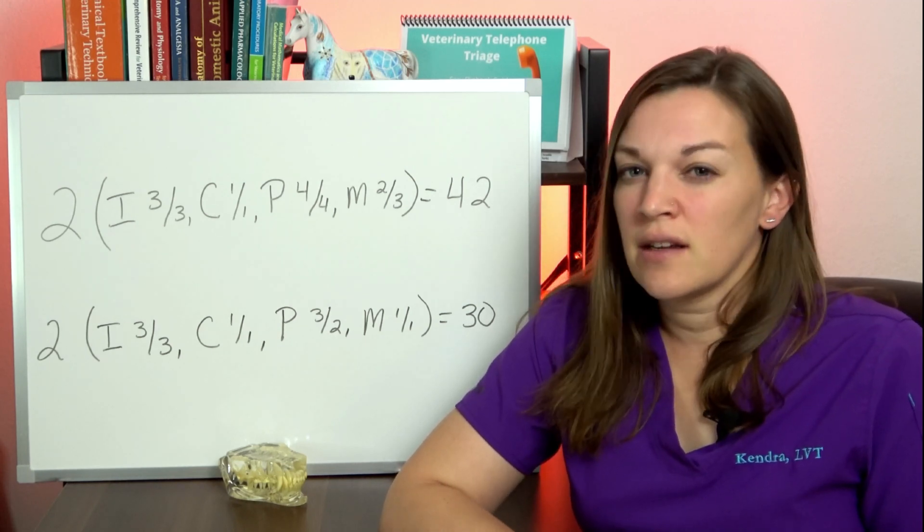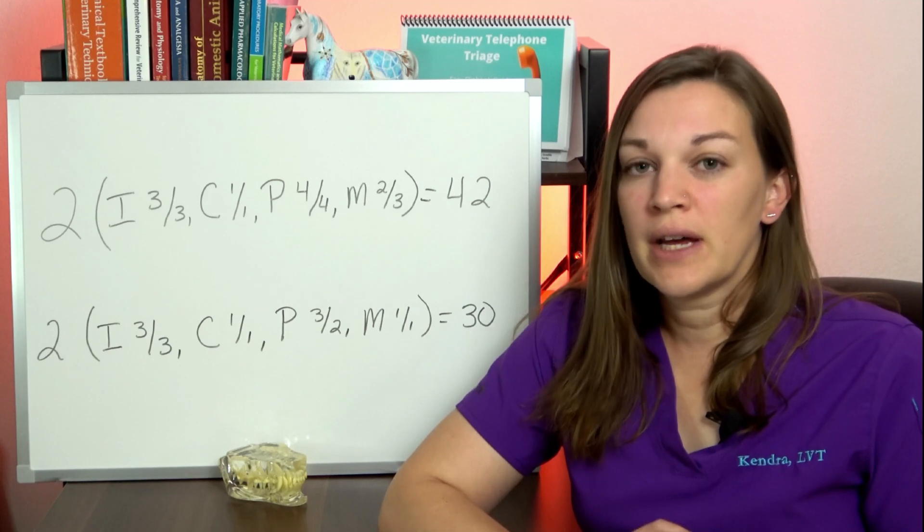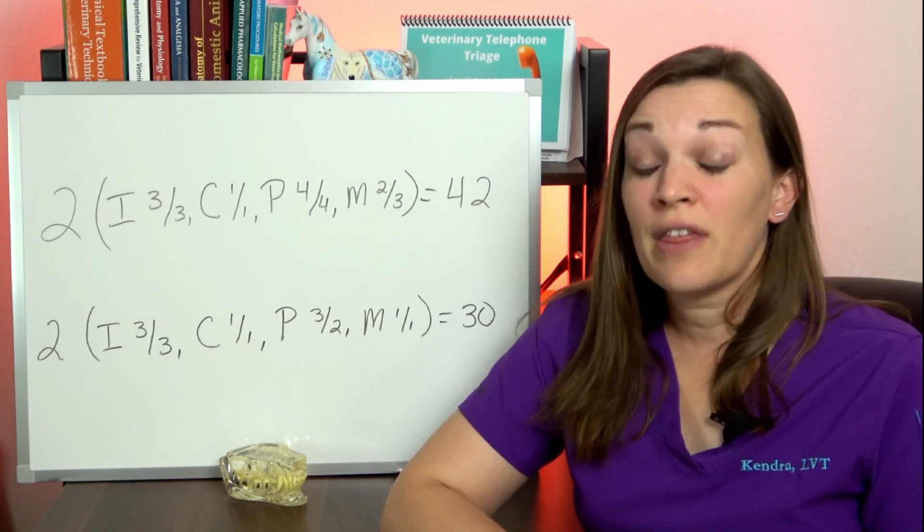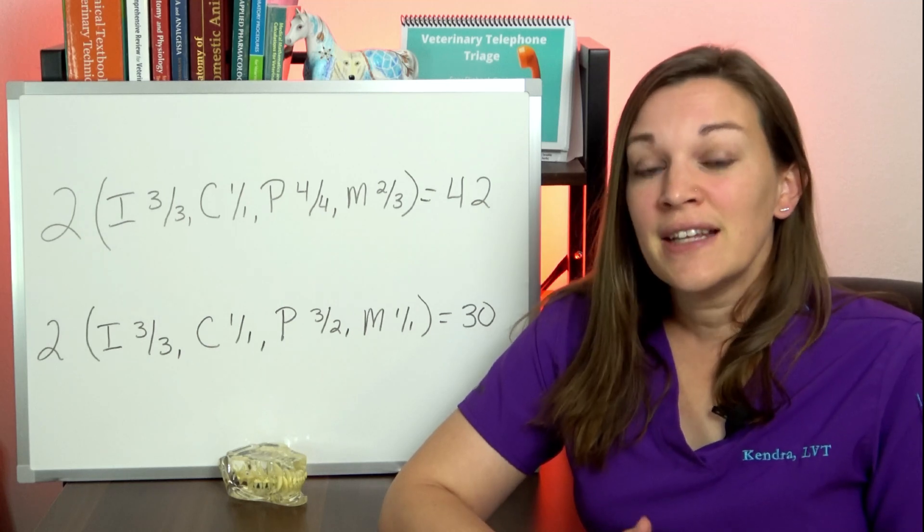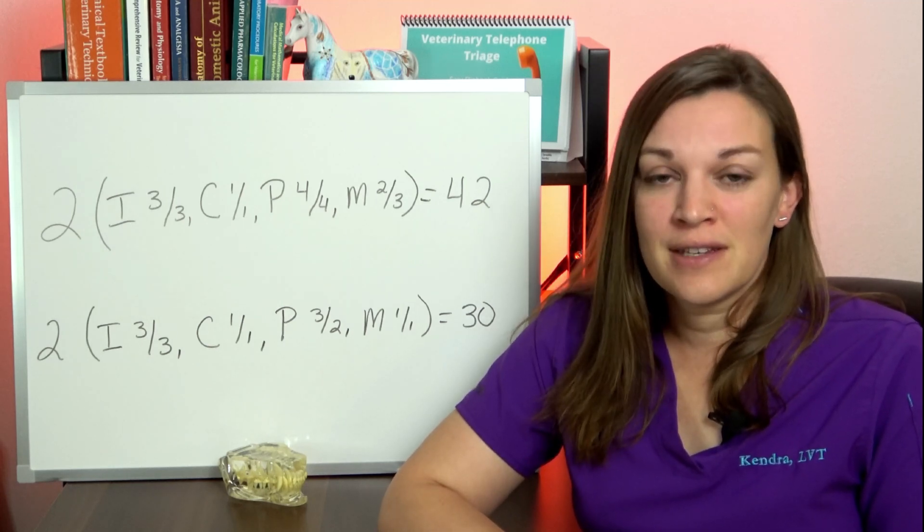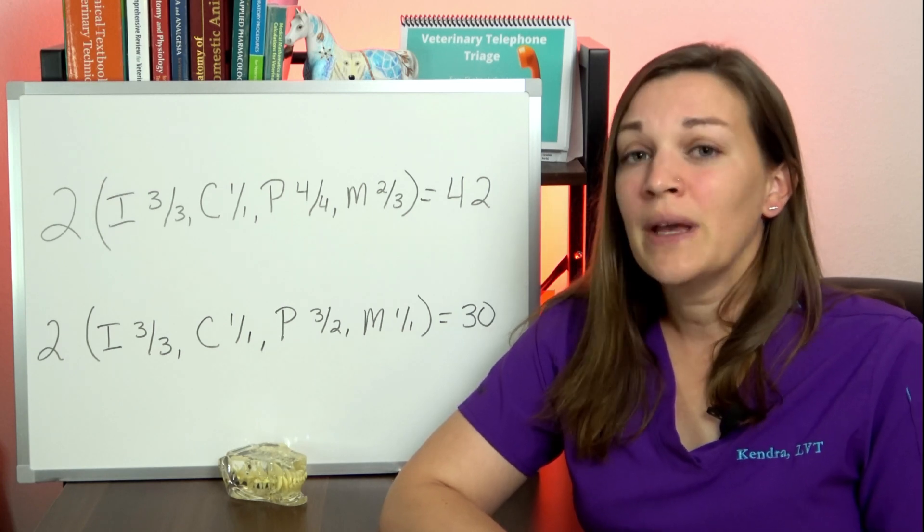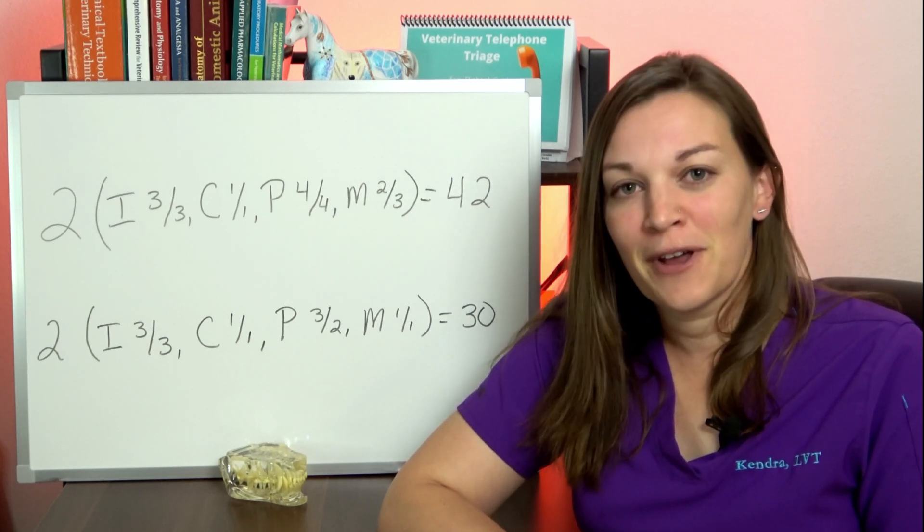What that is, is a numbering system to put a specific ID number on a specific tooth within your patient's mouth. It's helpful because rather than saying, take a look at that upper right first incisor, we can simply say, hey, take a look at 101.